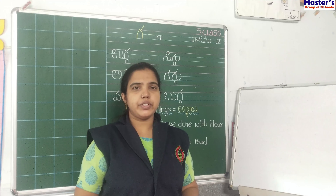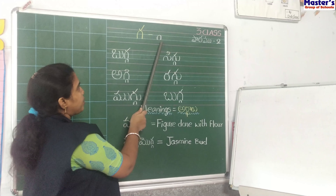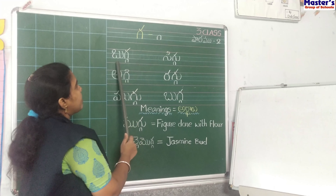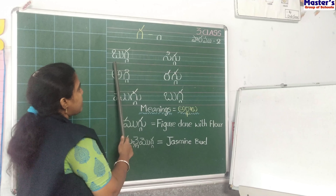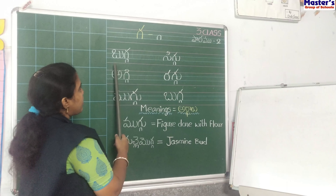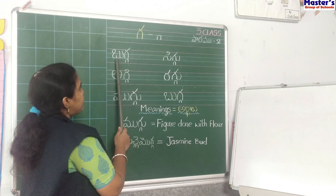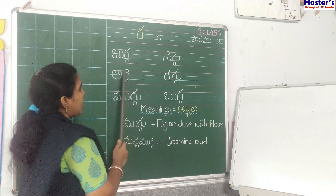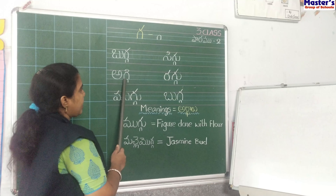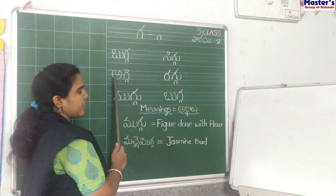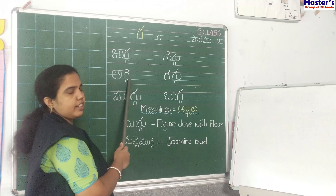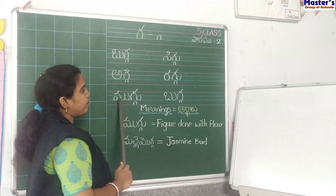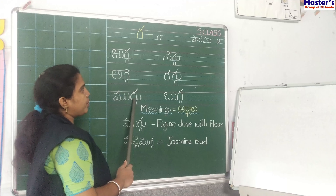Ga, Gaotu. Read these words. Say after me. Bugha, Bugha. Agi, Agi. Muggu, Muggu.